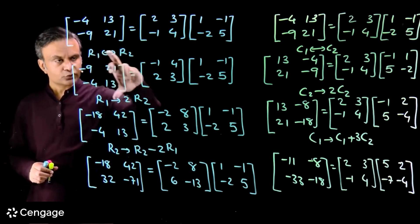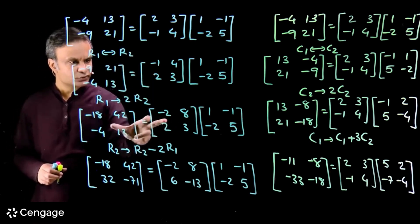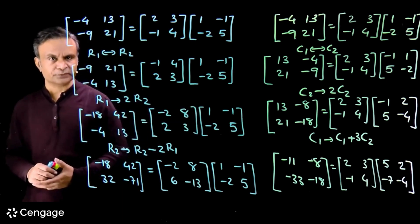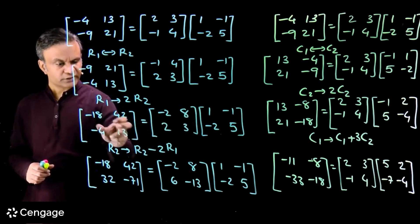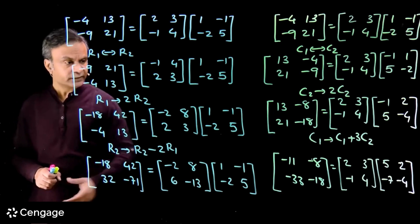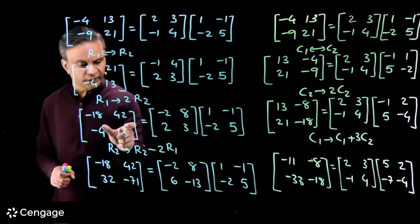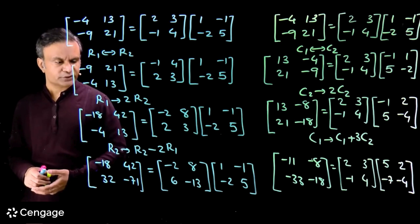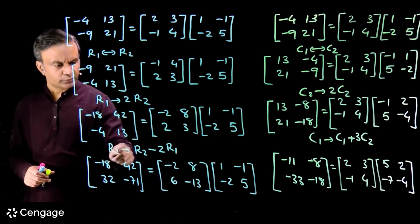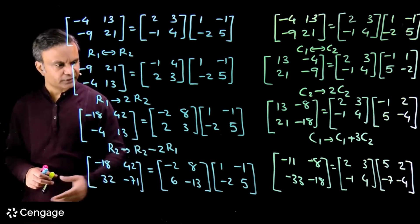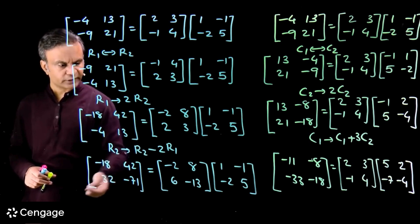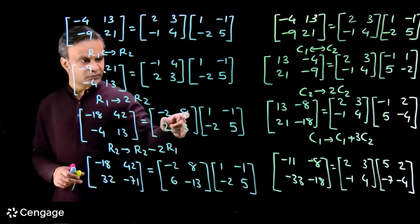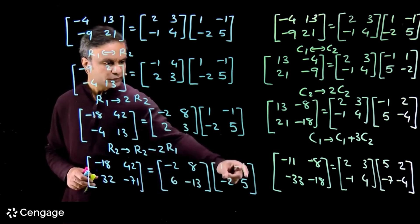After these two row operations, the equation here is valid — this product is valid. The change we are doing here is: R2 changes to R2 minus 2R1. I am multiplying elements of row 1 by 2 and then subtracting from row 2. So I have this new matrix on the LHS and this matrix transforms accordingly; this matrix is intact.